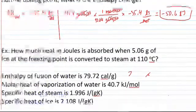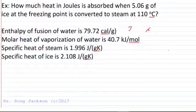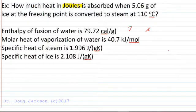Let's look at a slightly more involved problem here. We're asked to find the heat in joules that is absorbed when 5.06 grams of ice (H2O) at the freezing point is converted to steam at 110 degrees Celsius. Overall, if we're keeping track from our chart, we don't have to heat the ice; we just have to convert it from solid to liquid.